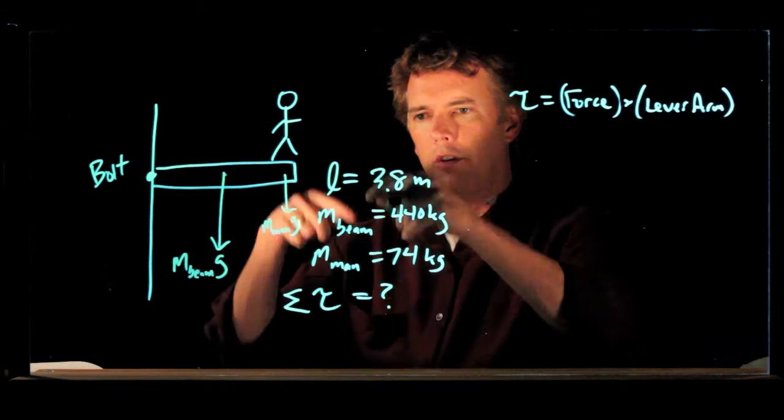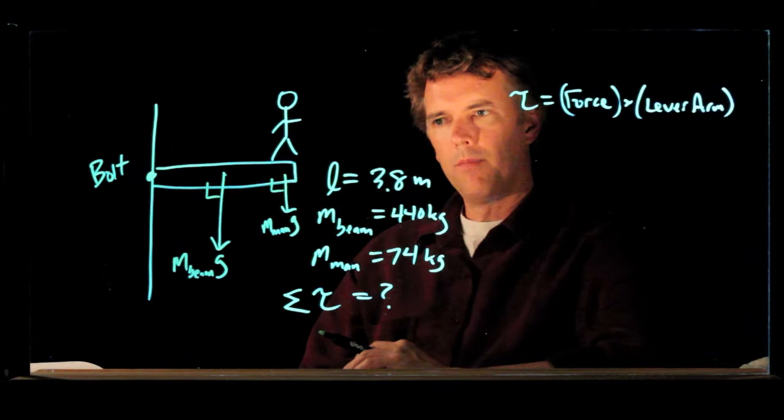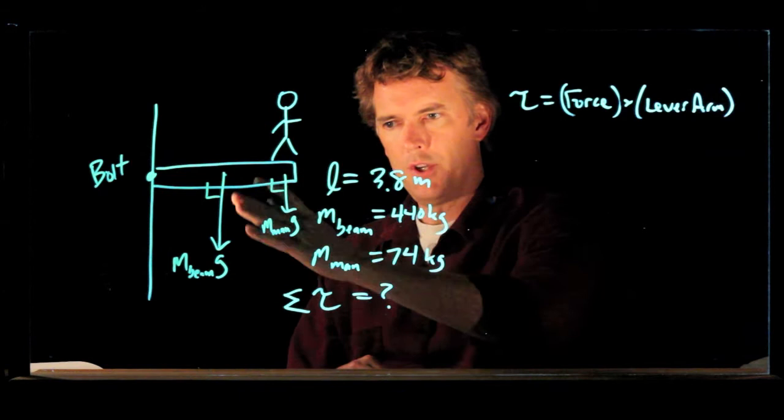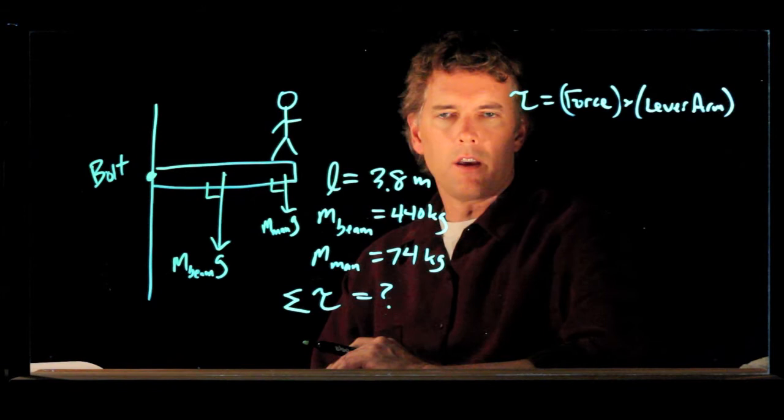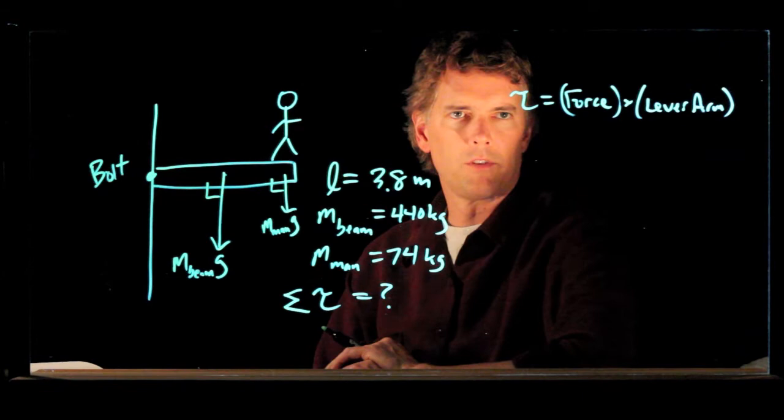Now both of those forces are at right angles to our horizontal beam. And so the lever arm just becomes either L for the man or L over 2 for the beam, because we can think of all the mass of the beam being concentrated at the center of mass, which is of course halfway.